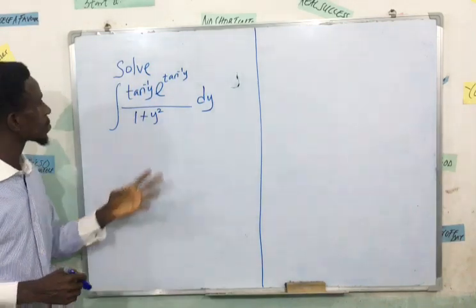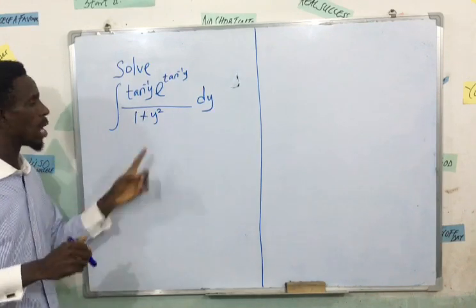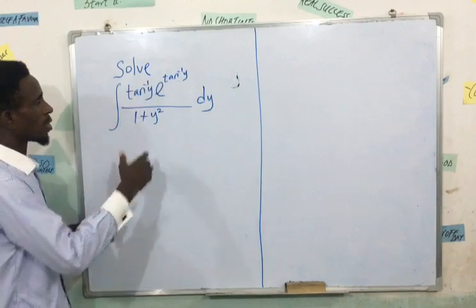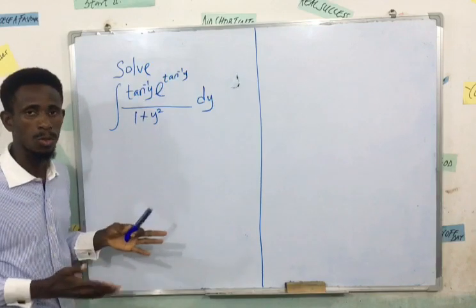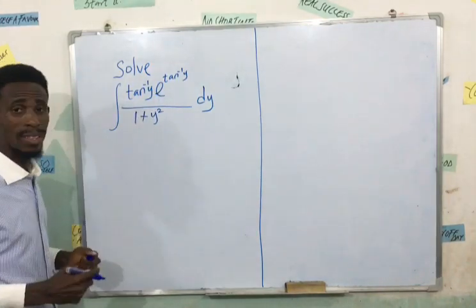Now if you look at this very carefully, tan inverse of y, or inverse tan of y, if you differentiate inverse tan of y, you're going to have 1 over 1 plus y squared. So in this scenario you'll discover that there's a way we can do this and this 1 plus y squared will by the end of the day cancel out to the other 1 plus y squared.